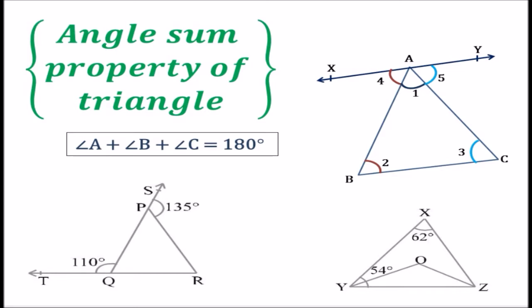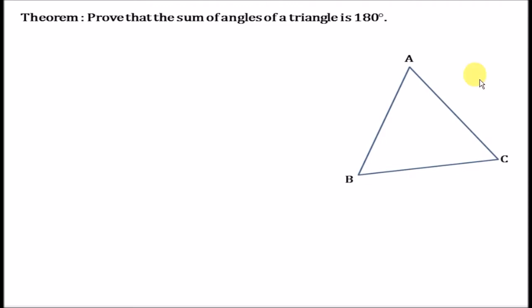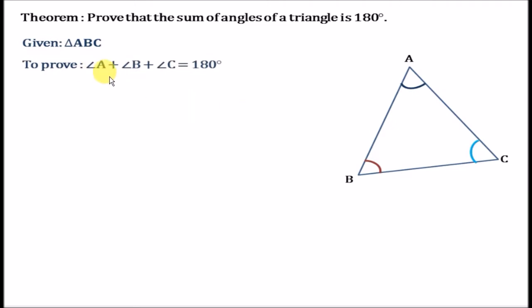Hello dear students. In this video we will prove the theorem of angle sum property of triangle and we will also apply the property to solve some questions. The statement of the theorem is: prove that the sum of angles of a triangle is 180 degrees. We are given triangle ABC with vertices A, B and C, and we need to prove that angle A plus angle B plus angle C equals 180 degrees.